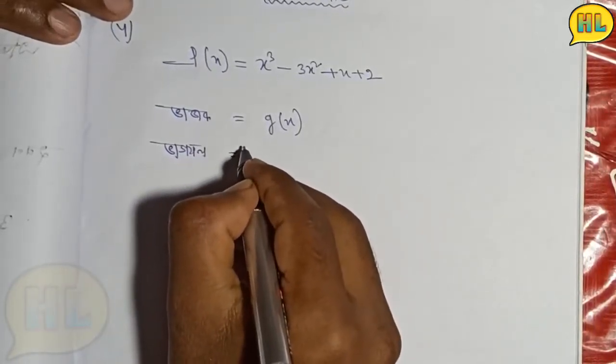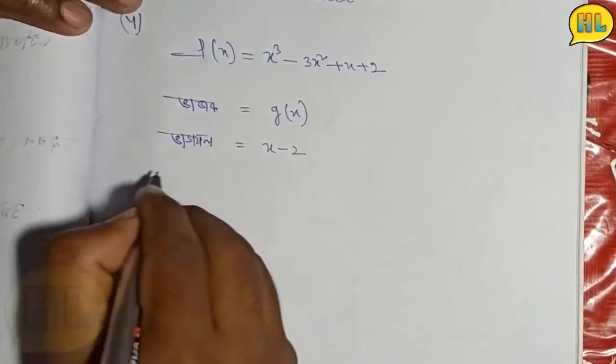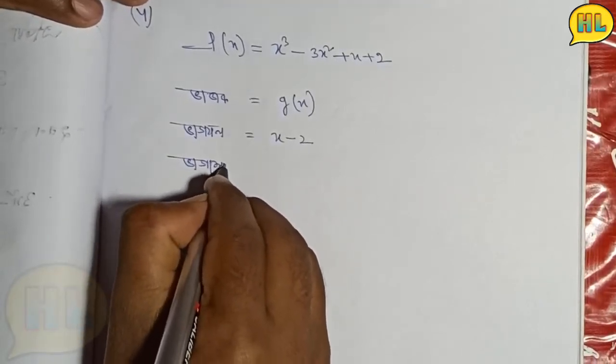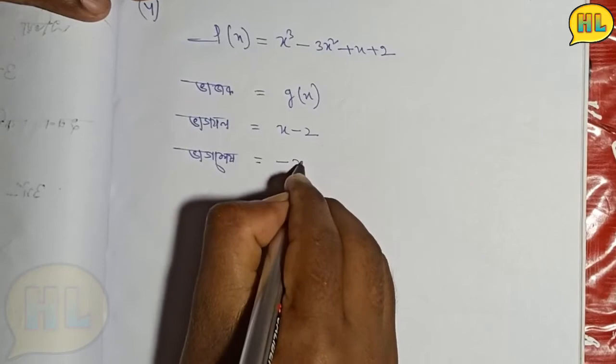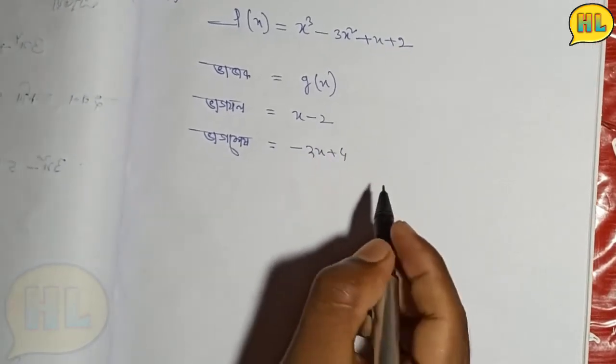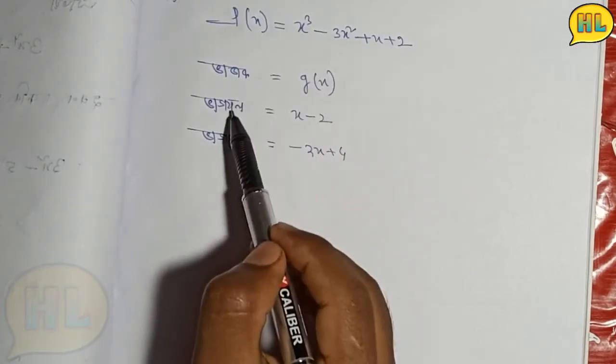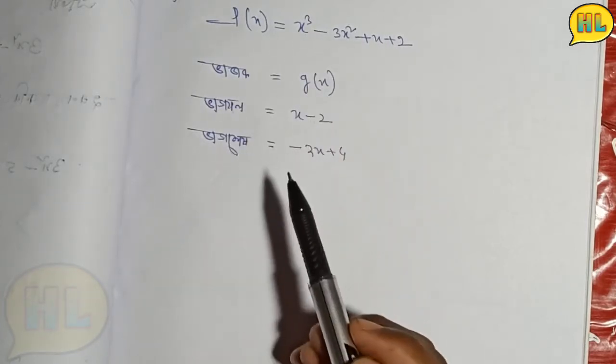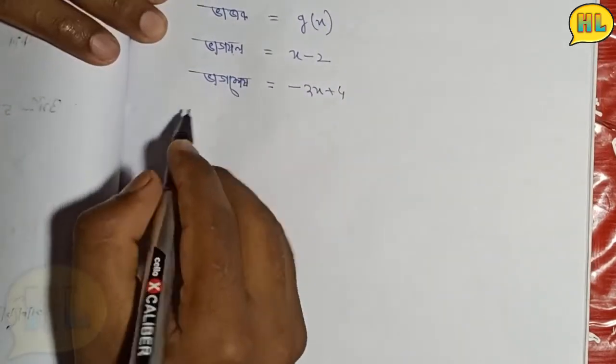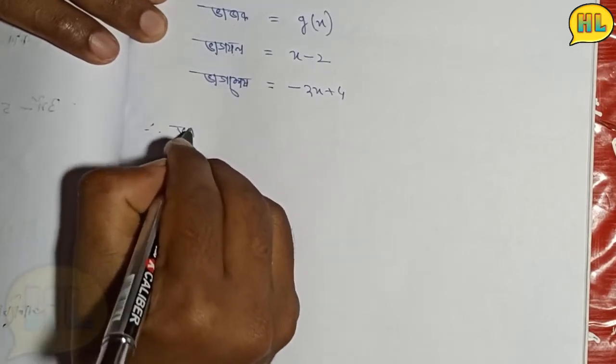The factors are x minus 2 on one side, and then we have minus 2x plus 4. So let me show you how to work through this problem step by step.